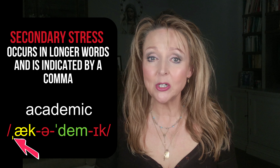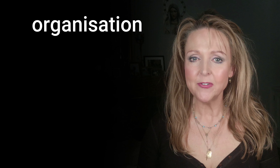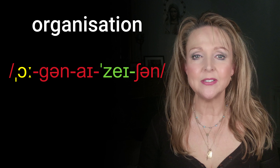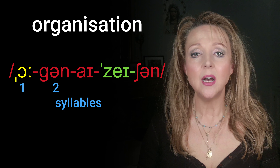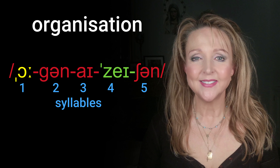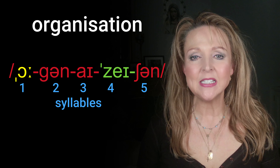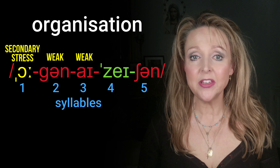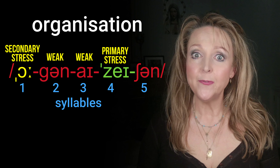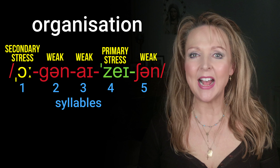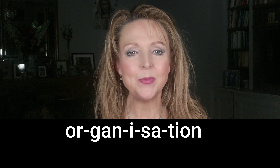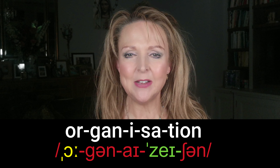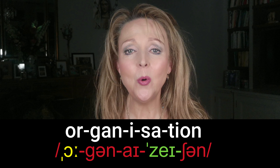Secondary stress occurs in longer words and is indicated by a comma. For example, the word 'organization' has five syllables: or-gan-i-za-tion. The first syllable is given secondary stress, the second and third are weak, the fourth syllable is given primary stress, and the fifth is weak, making it sound like 'organization'. Now you try: organization.